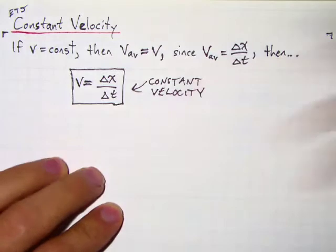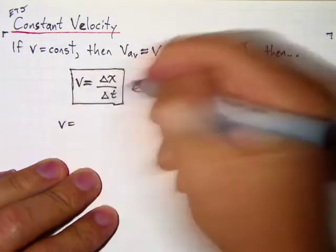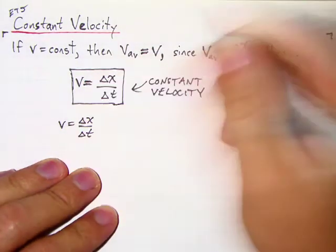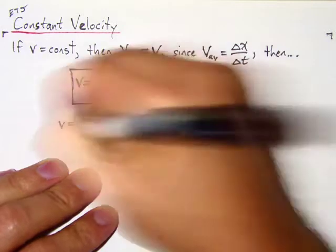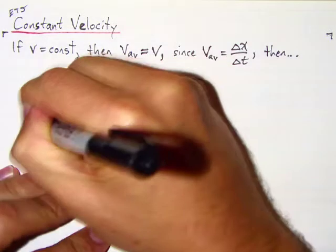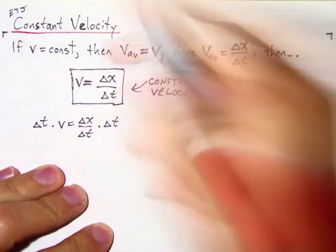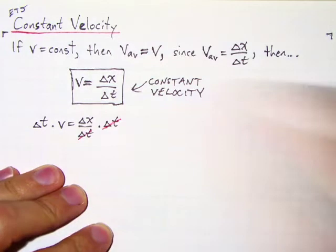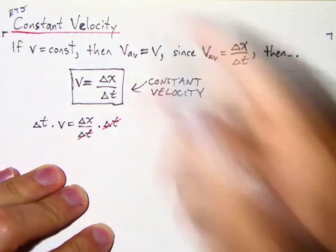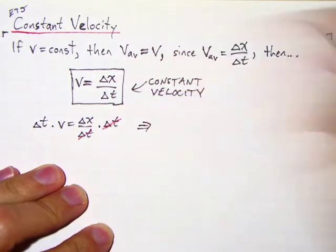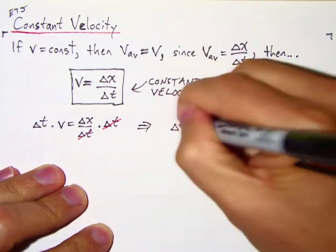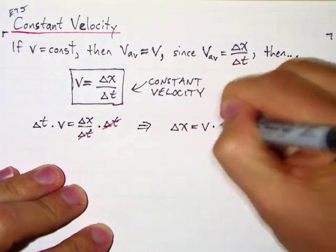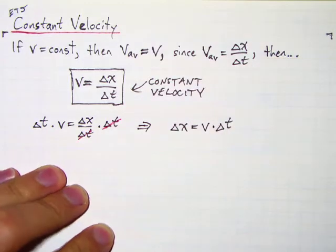We can rearrange this a few ways. Starting with delta x over delta t, let's multiply both sides by delta t. The delta t's cancel, which lets us rearrange algebraically to solve for delta x: delta x equals v times delta t.